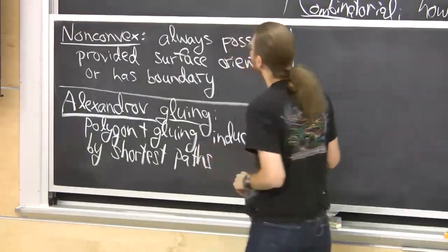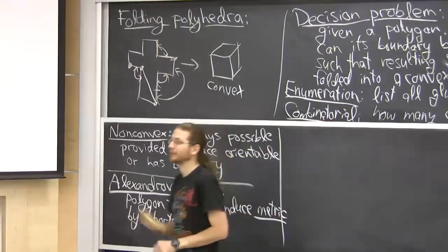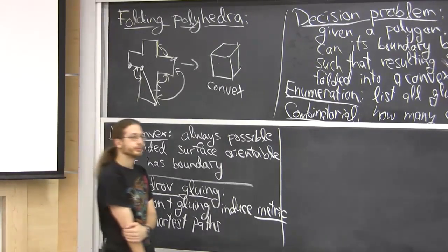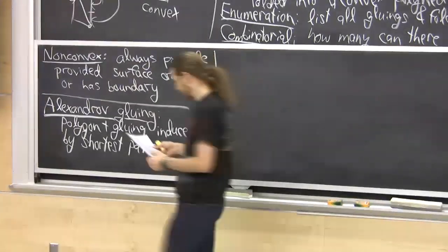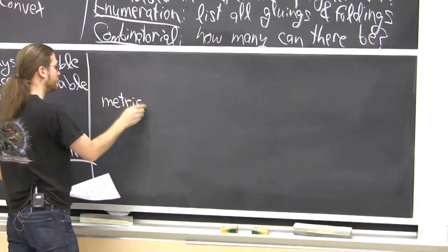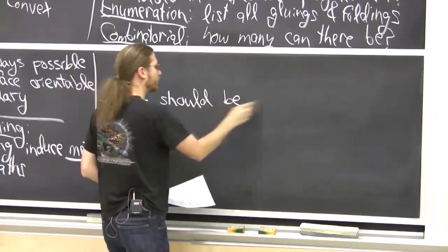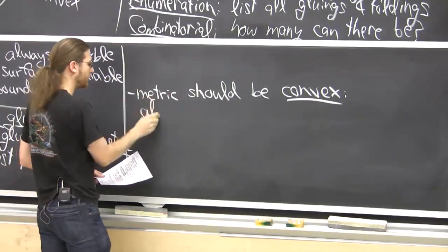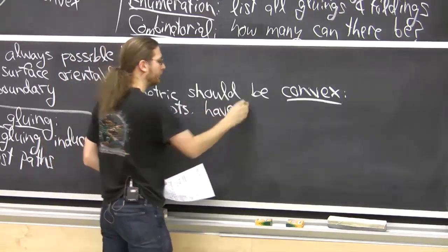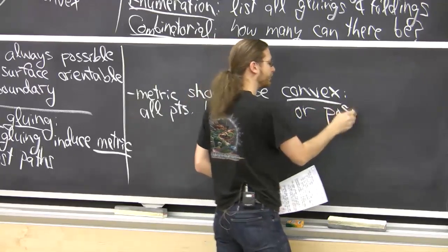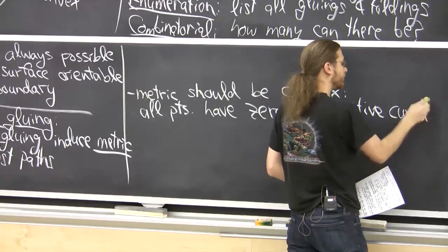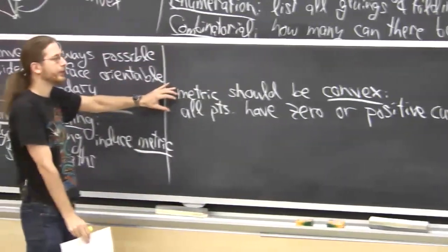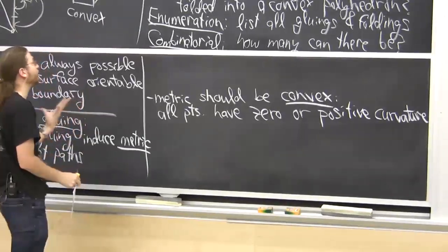There are three things this metric should satisfy if we want to make something convex. The first — less than or equal to 360 degrees of material at any point. All points have zero or positive curvature. Remember, curvature was 360 minus the sum of the angles at the vertex. So this is the same as saying you have at most 360 degrees of material at any point. This is obviously necessary, and you can evaluate it just knowing how things are glued together. It's a local property, and certainly necessary if we're going to try to make a convex polyhedron.